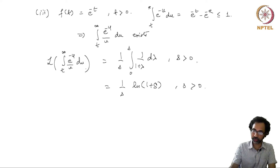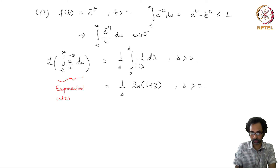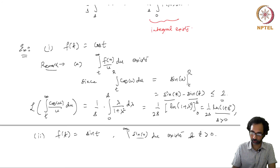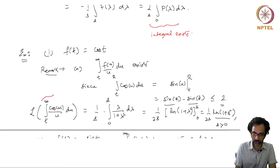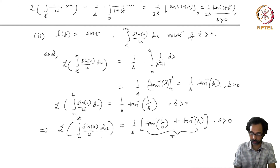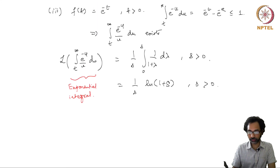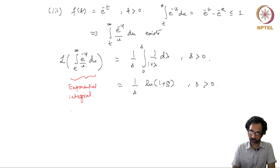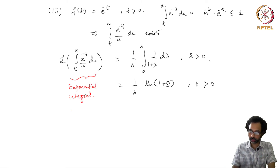These integrals have special names. The integral involving e^(−t) is called the exponential integral. The one for cos(t) is known as the cosine integral. The sine integral is not the integral from t to ∞, but rather the integral from 0 to t of sin(u)/u du. These important integrals sometimes come up in the theory of ordinary differential equations, and we need to know their Laplace transforms to solve those equations.